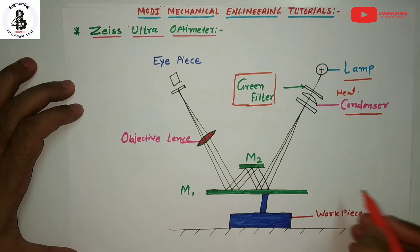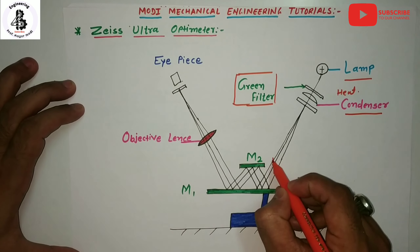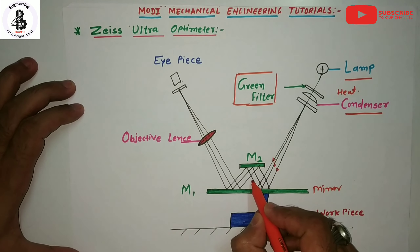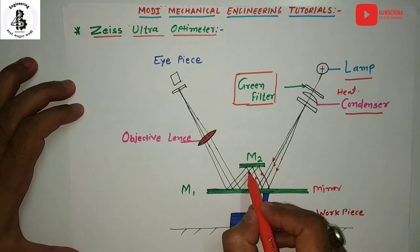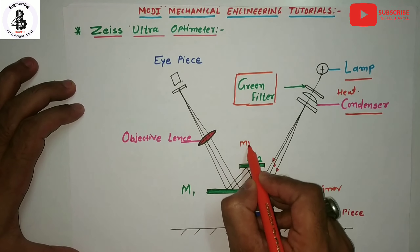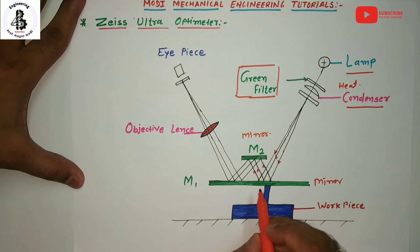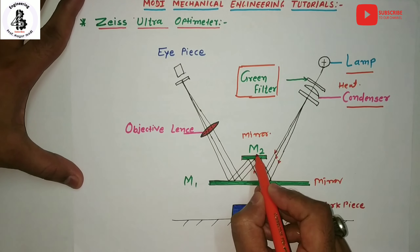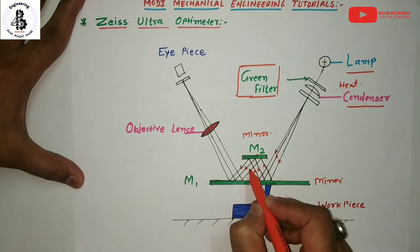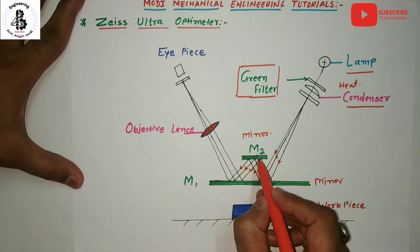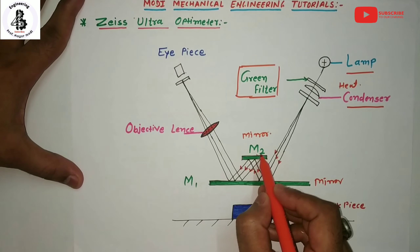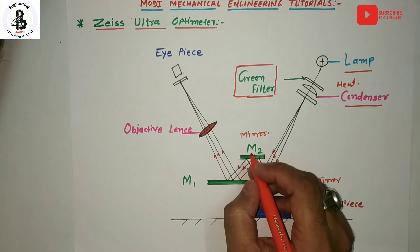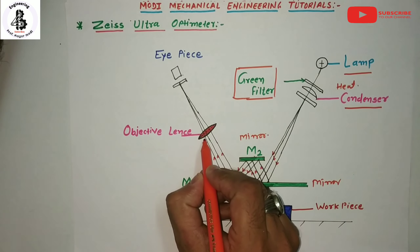These green color rays pass towards mirror M1. The rays are imparted onto M1 and by reflection are projected onto mirror M2, which is called the second mirror. Once again, these green rays are reflected from M2 back to M1, and then once again reflected from M1 towards the objective lens.